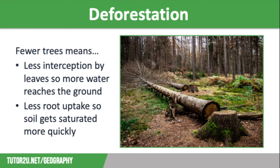Our second human factor that increases the risk of flooding is deforestation. Linked to urbanisation, many trees have to be cut down to make way for housing developments and infrastructure. Fewer trees reduces interception, as there are fewer leaves to stop rain reaching the ground. It also reduces root uptake, as there are fewer roots to absorb water from the soil. This means the soil gets saturated much more quickly, leading to increased surface runoff and a higher risk of flooding.